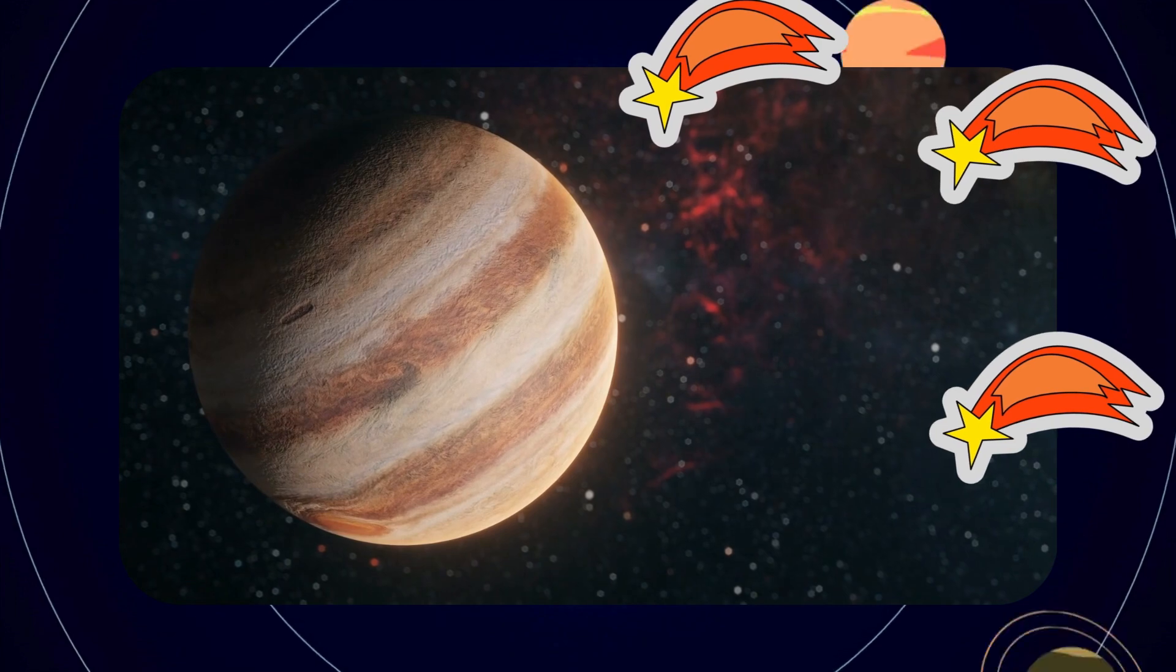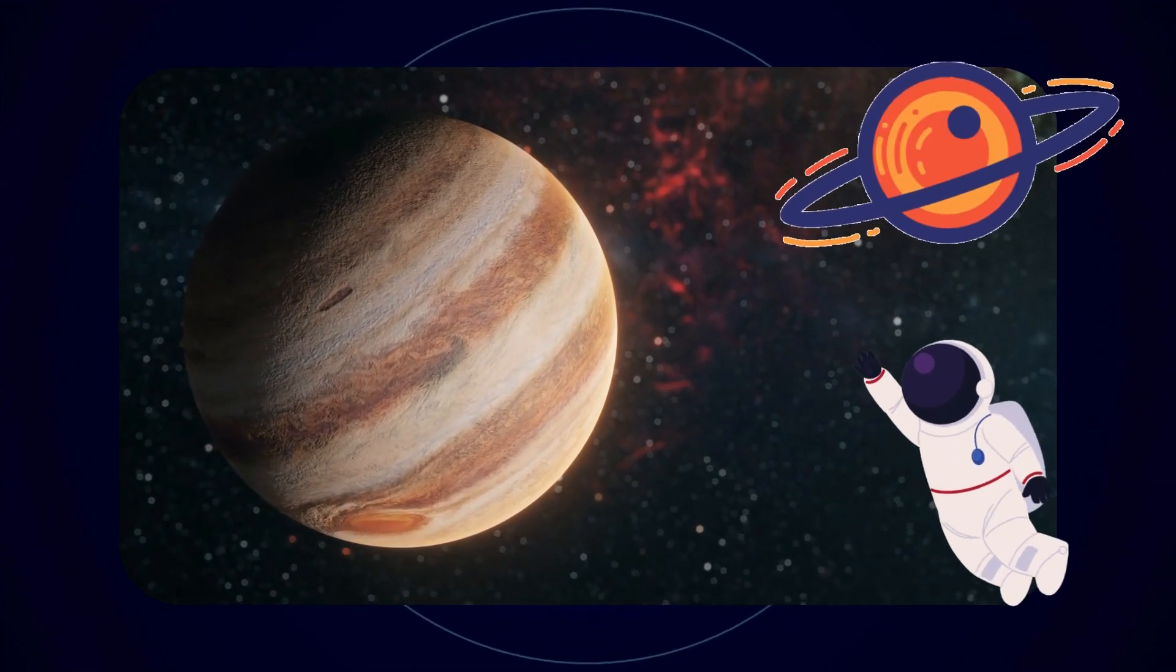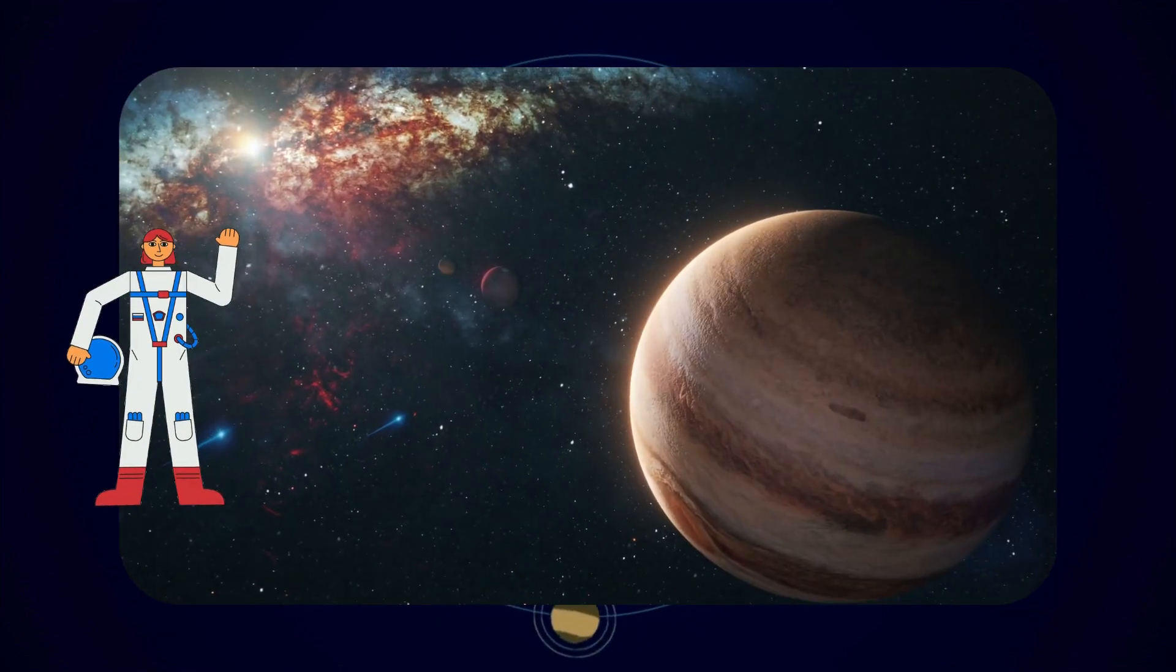Now Jupiter. Jupiter is the biggest planet. It's so huge. It could fit over 1,300 Earths. It has a big storm called the Great Red Spot.